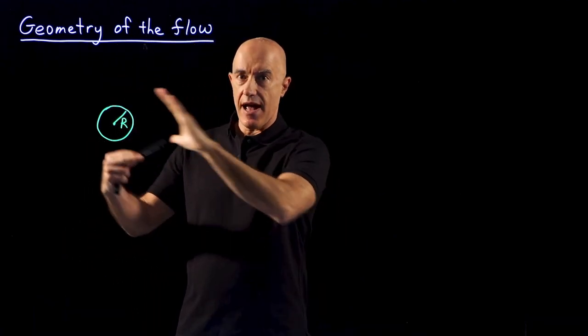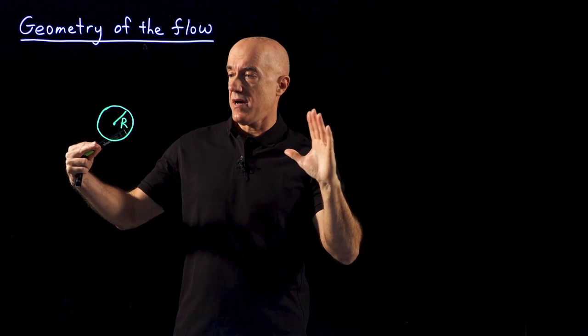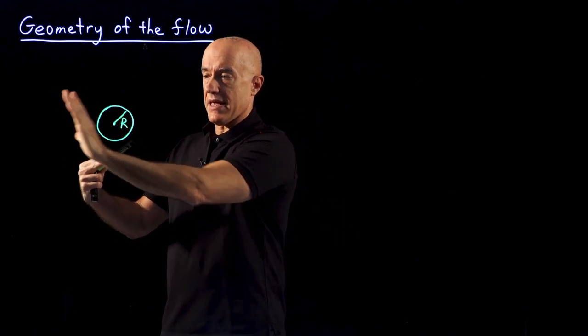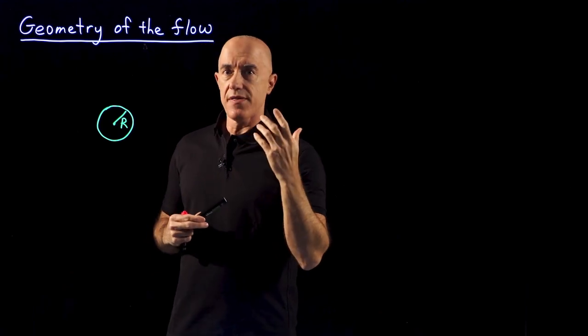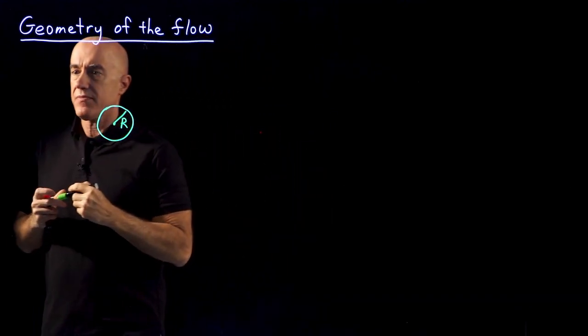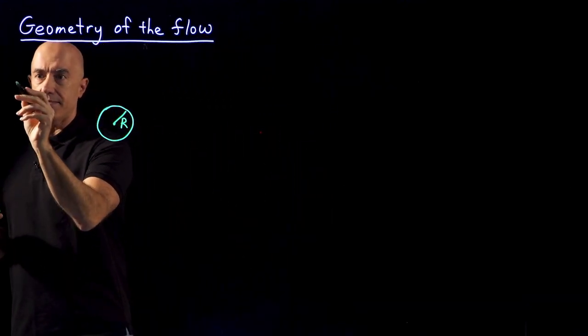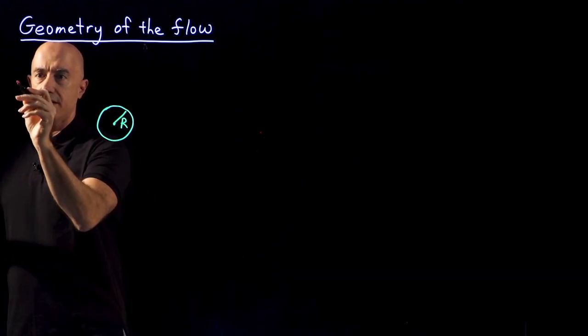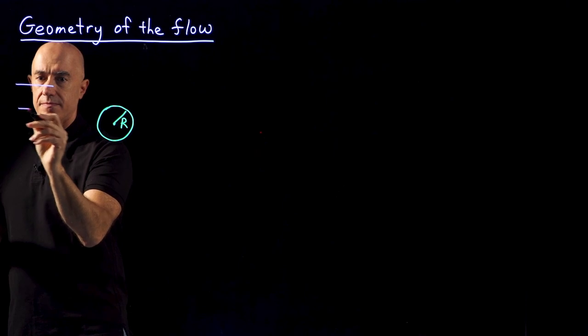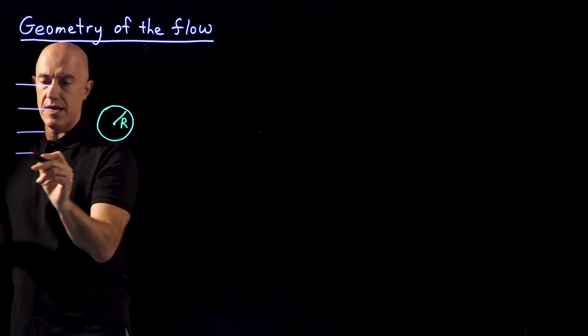So the flow is going to be coming into the cylinder. If we draw the free stream velocity, it will look like this. Let me draw the velocity field in red, coming in this direction.